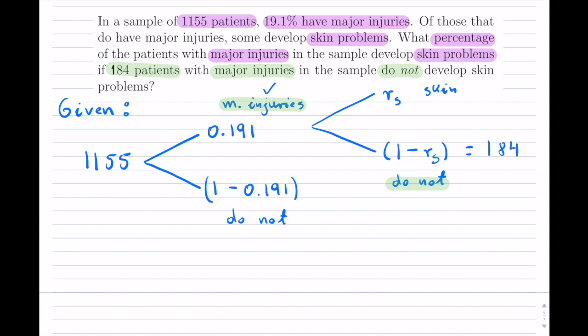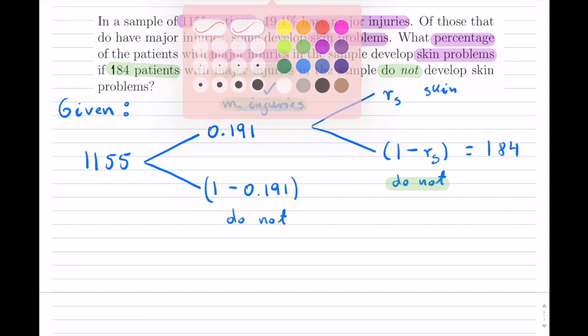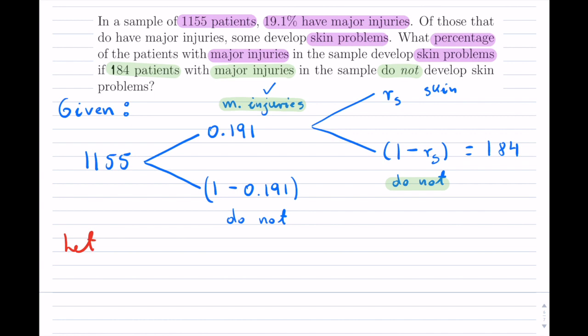And now we have to solve, because notice what they're asking us for. So we have to solve for RS. That's at least what they want. So let RS be the sample with major injuries and skin problems. That's what they want. They want the percentage of that.